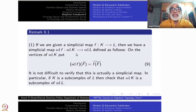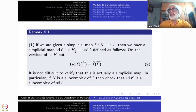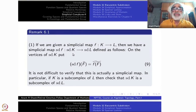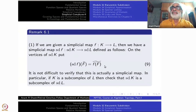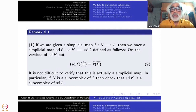How do you define sd(f)? First of all, you have to define it on the vertex set. The vertex set consists of barycenters of simplices of K. Take one barycenter F-hat; sd(f) sends it to the barycenter of the image f(F), namely (f(F))-hat. f(F) is a simplex because F is a simplex and f is a simplicial map, so this is a simplex in L, and you take its barycenter. So this is a vertex map.